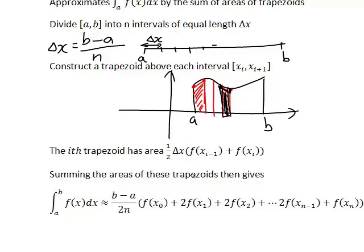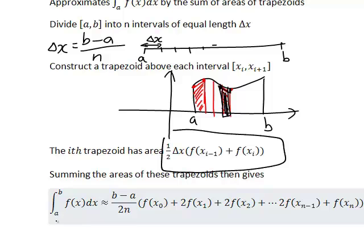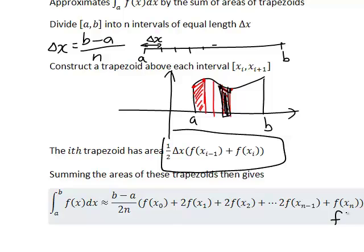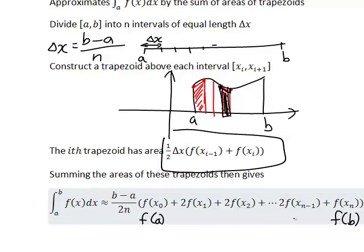Adding up the areas of these trapezoids, it can be shown that the integral from a to b of f(x) is approximately (b minus a) divided by 2n, times f(x_0) plus 2·f(x_1) plus 2·f(x_2), continuing on to 2·f(x_{n-1}), and finally plus f(x_n). Here f(x_n) is the value of the function at the final point b, f(x_0) is f(a), and the intermediate points are found by adding delta x each time to get x_1, x_2, up to x_{n-1}.